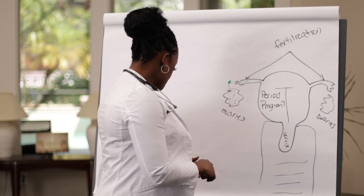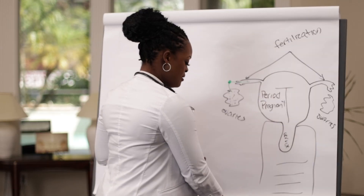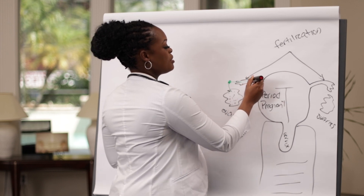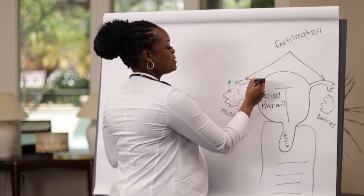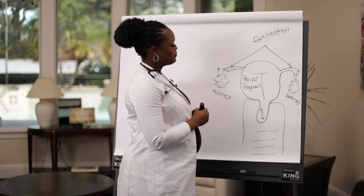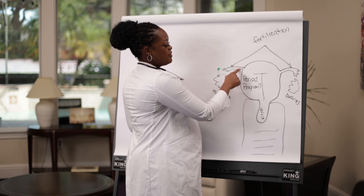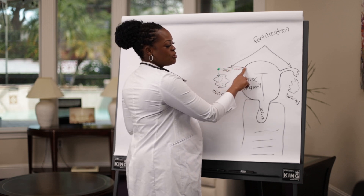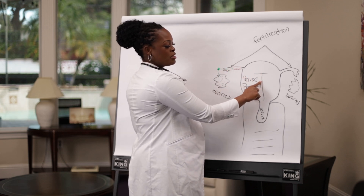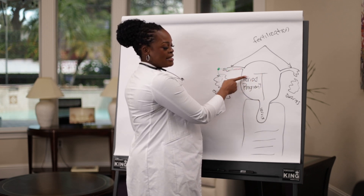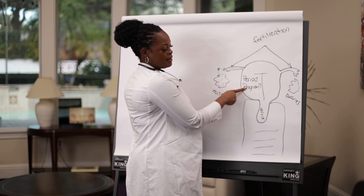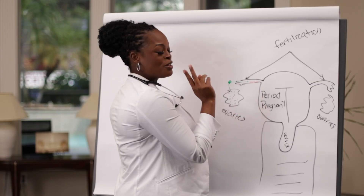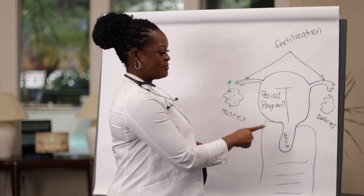If there is a sperm there and fertilization occurs — the sperm meets the egg — fertilization happens and they travel together to the uterus. And instead of you having a period, pregnancy is established, because your uterus is either doing one of two things: pregnancy or period, unless you're in menopause.